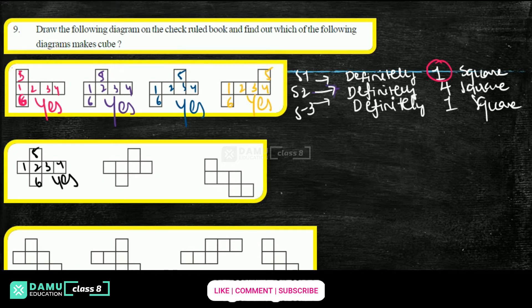Next one: here one, two, three, four, five, six — top one is there, down one is there, middle three is there. Yes, it is also possible.